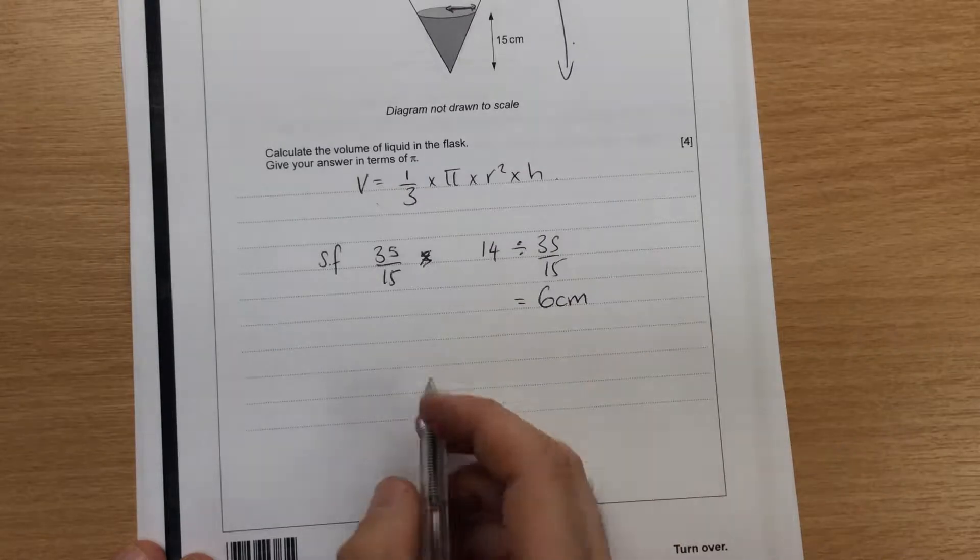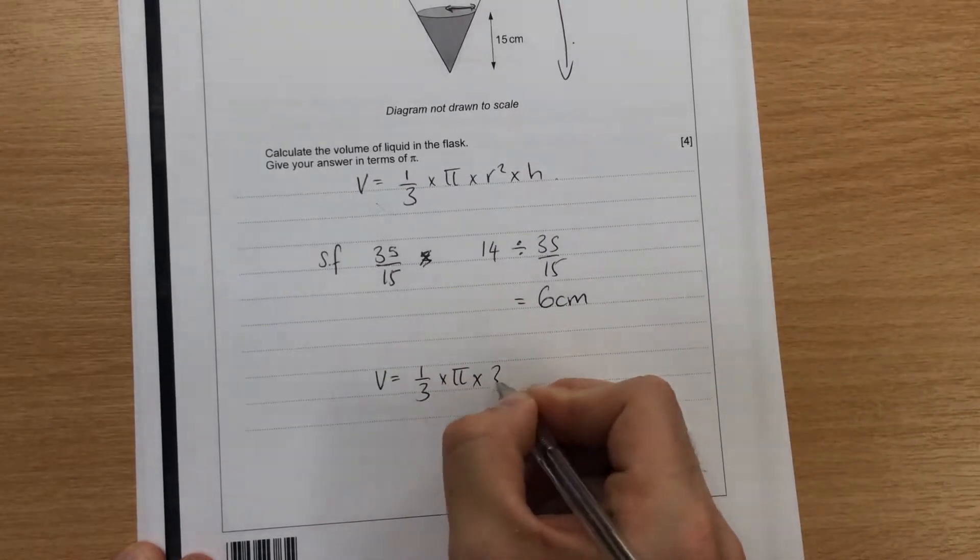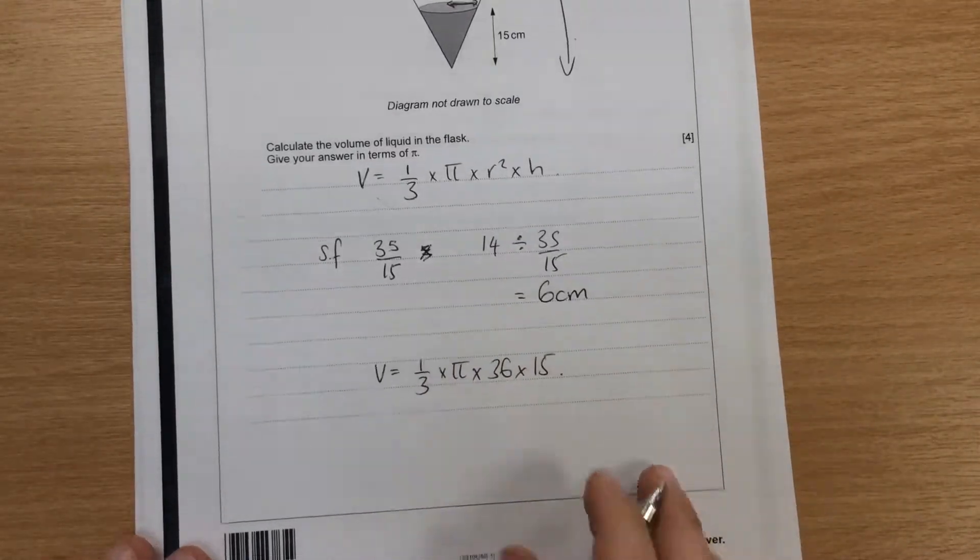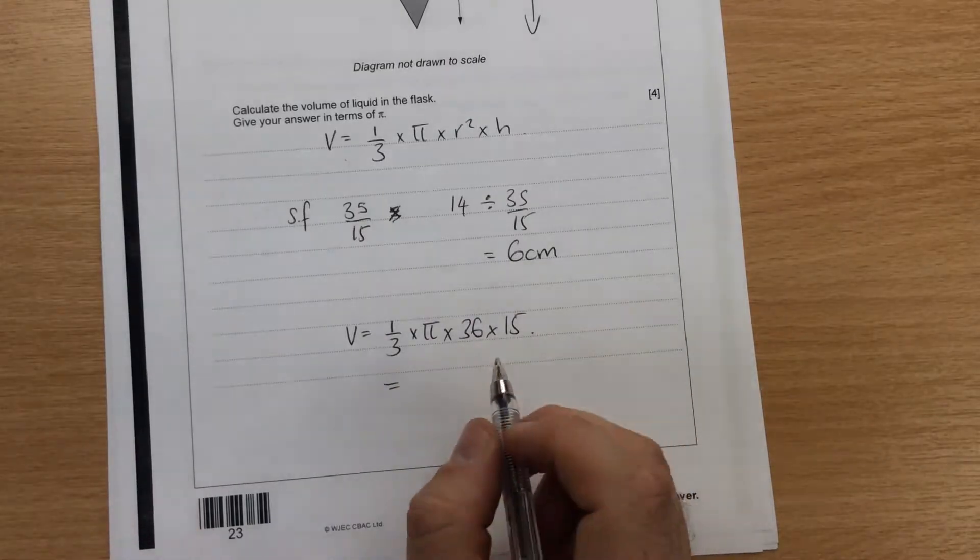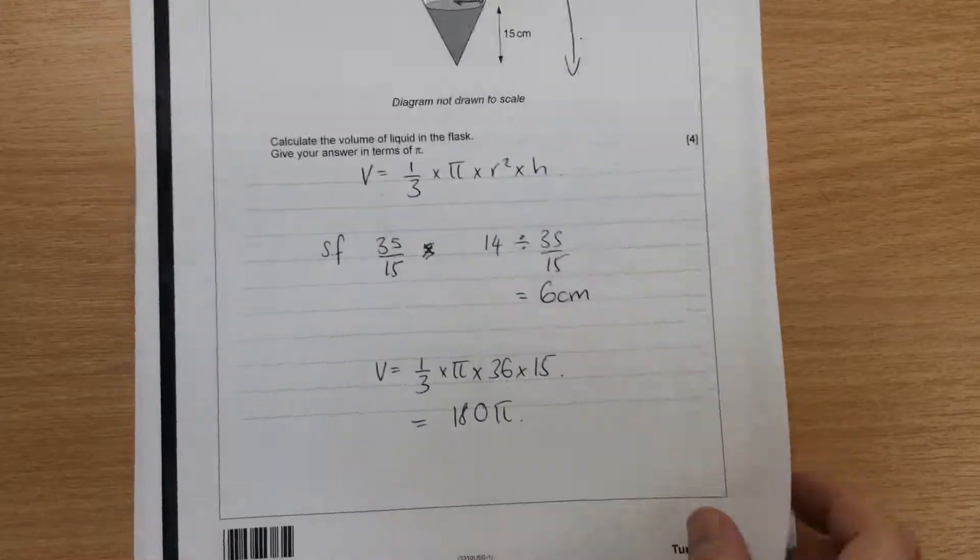Then we can just fill that into here. So we're going to get v equals a third times pi times 36 times the height, which is 15 of this one, times 36 by 15, and then divide it by 3, and you end up with 180 pi as the answer.